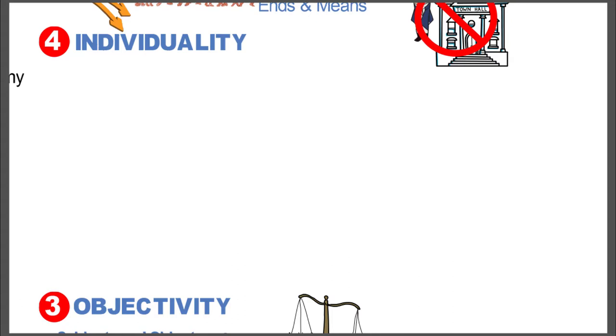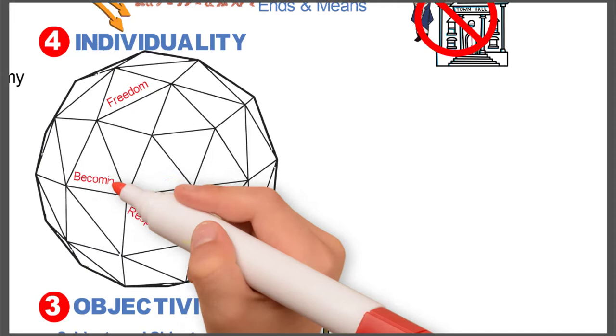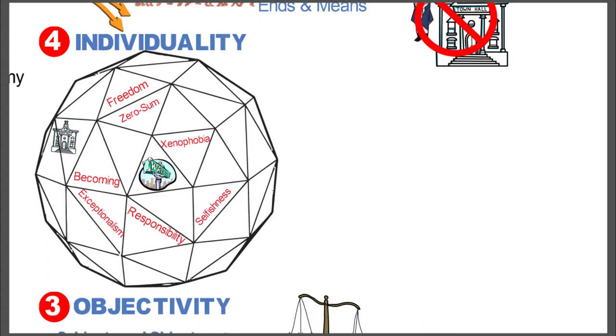When you look at all of the different complexities of a particular individual, an individual wants to go after freedom, responsibility, they're becoming. Meanwhile, they are xenophobic, selfish, zero-sum, they're exceptionalists. They're influenced strongly by the world of money or their economics, by the church and by the state.